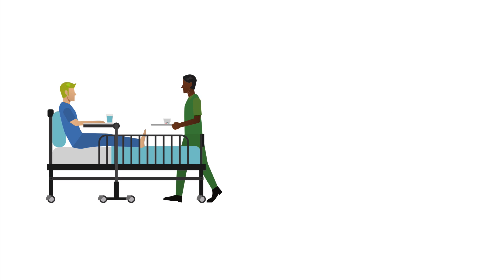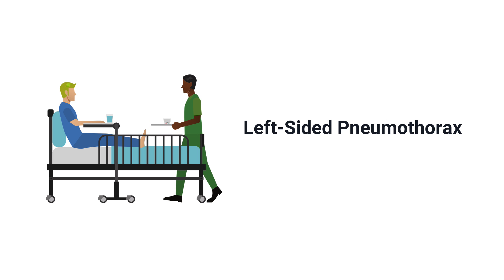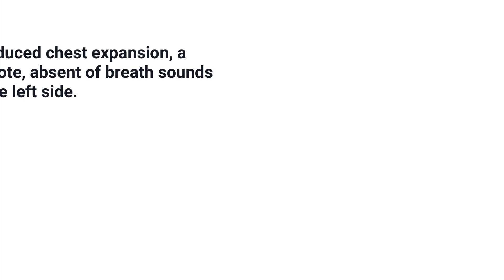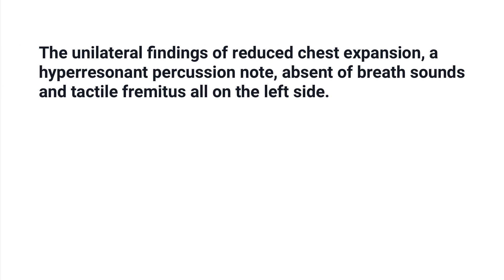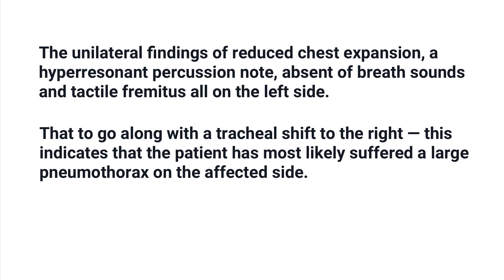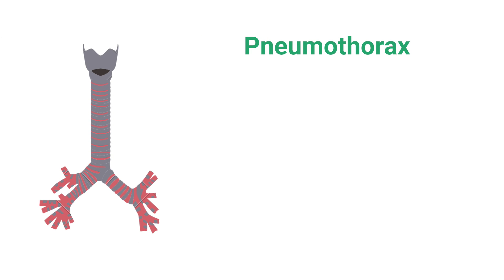By assessing this patient and reading what they told us in the question, we can quickly determine that the correct answer has to be a left-sided pneumothorax. The unilateral findings of reduced chest expansion, a hyper-resonant percussion note, absent breath sounds, and tactile fremitus all on the left side, along with a tracheal shift to the right, indicate that the patient has most likely suffered a large pneumothorax on the affected side.